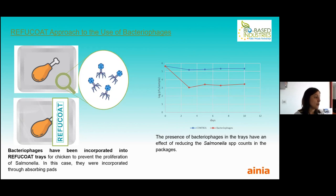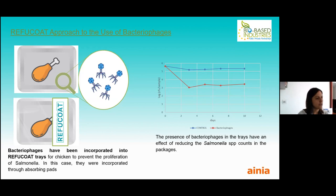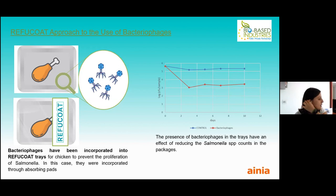The results show that in the blue line we have the control sample without bacteriophages, and in the red line the sample with bacteriophages. We can see that the bacteriophages effectively decrease the counts of Salmonella that were initially incorporated. This is a very promising result that suggests bacteriophages are a useful strategy to fight against this kind of bacteria.